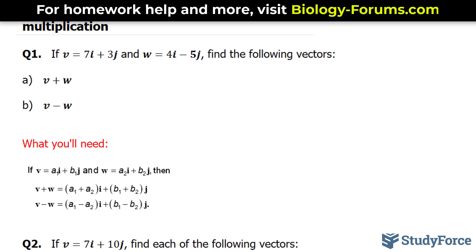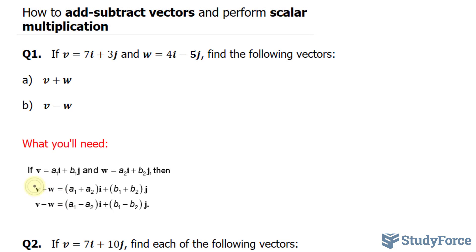To be successful here, you'll need to know the following: where if you're adding two vectors v and w, you add the x component of each vector and the y component of each vector, and those will end up becoming the x and y components of your resultant vector.